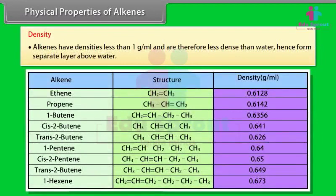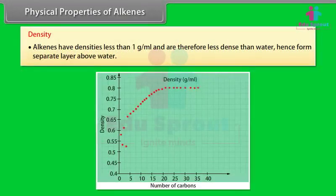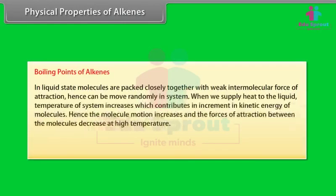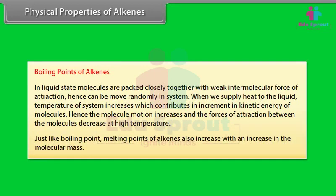Density: Alkenes have densities less than 1 gram per milliliter and are therefore less dense than water, forming a separate layer above water. As molecular mass increases, density increases. Boiling Points: In the liquid state, molecules are packed closely together with weak intermolecular forces of attraction. When heat is supplied, the temperature increases, contributing to an increase in kinetic energy of molecules, causing molecule motion to increase and forces of attraction to decrease. Melting points of alkenes also increase with an increase in molecular mass.